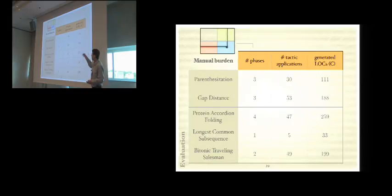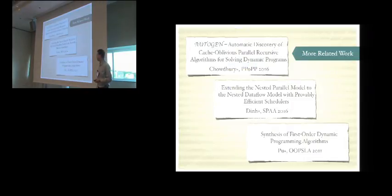I also evaluated how hard it is to use the system. For each of those examples, you see how many phases, that is, how many subroutines you had to develop using the system, and how many tactic applications you had to do. And this is how many lines of code of C generated. So you can see that you don't need a lot of tactic applications relative to the number of lines of C code. We know that if you wanted to verify this, usually it's at least one to one. So you have to write at least one line of annotations per line of code that you want to verify. So this is a good ratio.